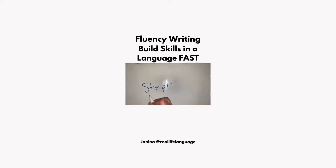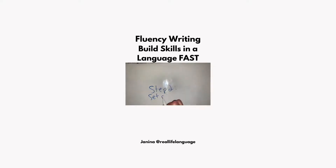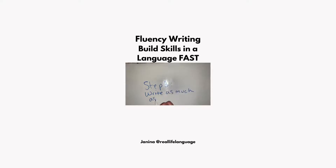Another activity you can do with this same notebook when you've built some skills is fluency writing. This is really great if you're at around the A2 or B1 level. You pick a topic and set a timer — I would do about six or seven minutes — and you write. For example: your family, your house, describe a typical day. It can be lists, it can be sentences. You don't allow yourself any help. At the end you look at what you missed, what you didn't know, and you fill in those gaps — that's when you go look up those words.